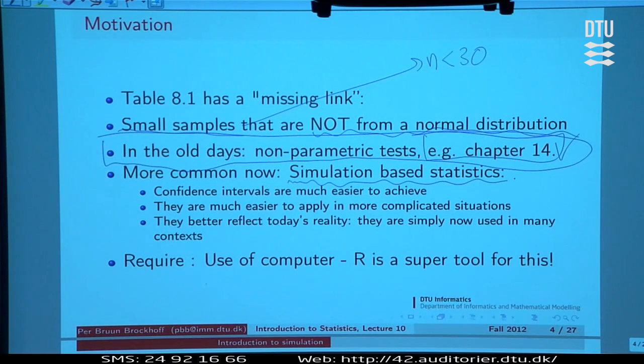So now it's more common as the alternative to the classical methods to do simulation-based methods, where we use raw computing force rather than theory to find out what we want to find out about. So we substitute some of the mathematical theory by raw computing. That's the whole point of it. It's much easier to obtain confidence intervals than the classical methods. It is more easy to apply in more complicated situations. Now I'm going to show you how to do it in the most simple situations that we met in chapter 7 and 8, but the simulation-based idea can be used in all situations.